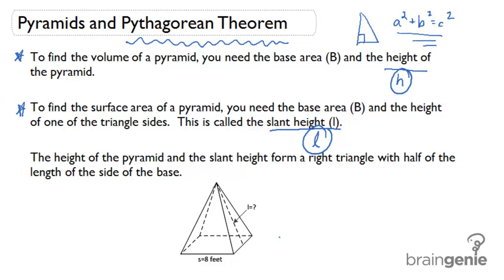In a pyramid, we actually form a right triangle. If you take a look here, I'm going to draw a right triangle that is formed in a pyramid and then redraw it outside the pyramid.